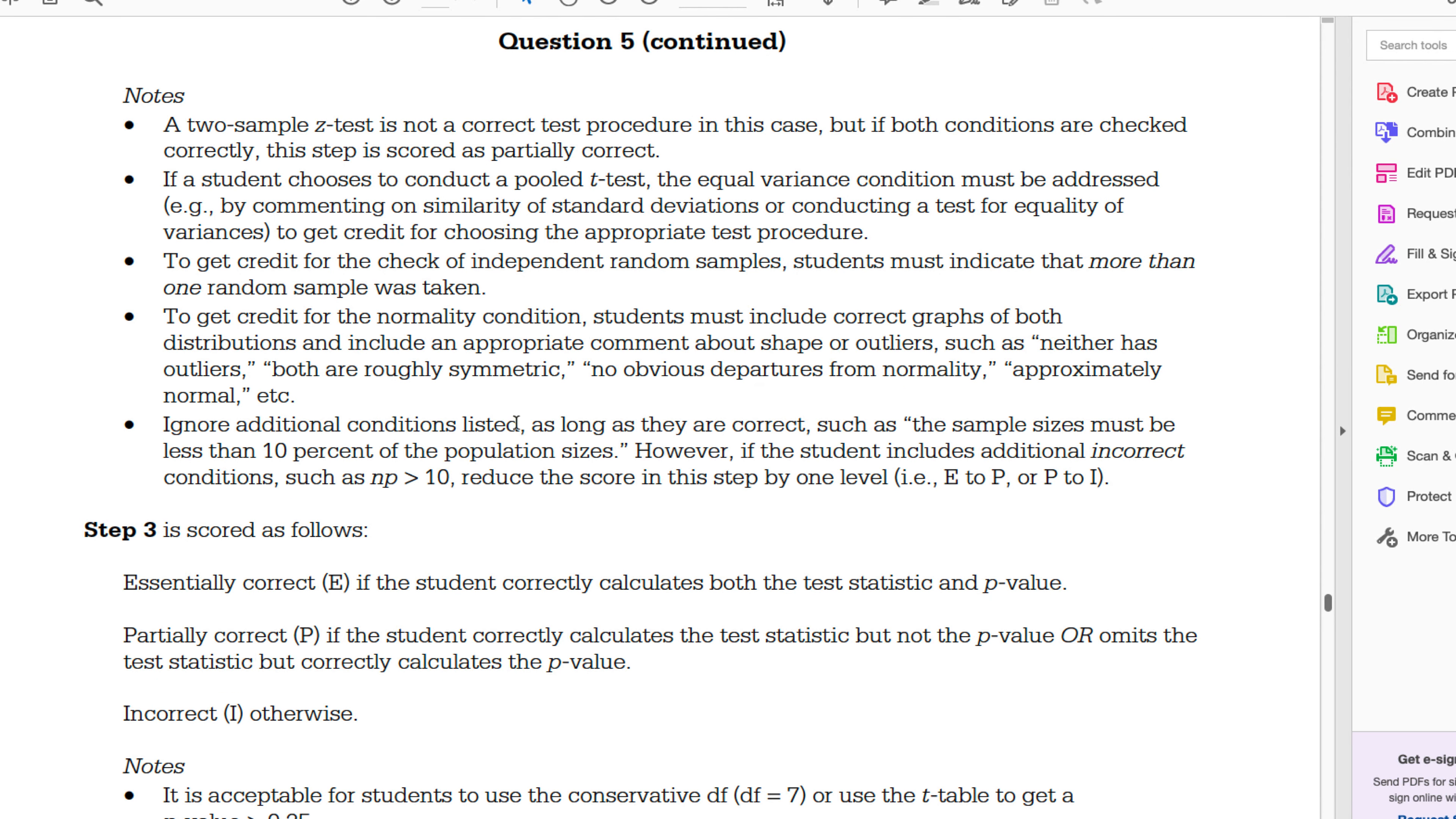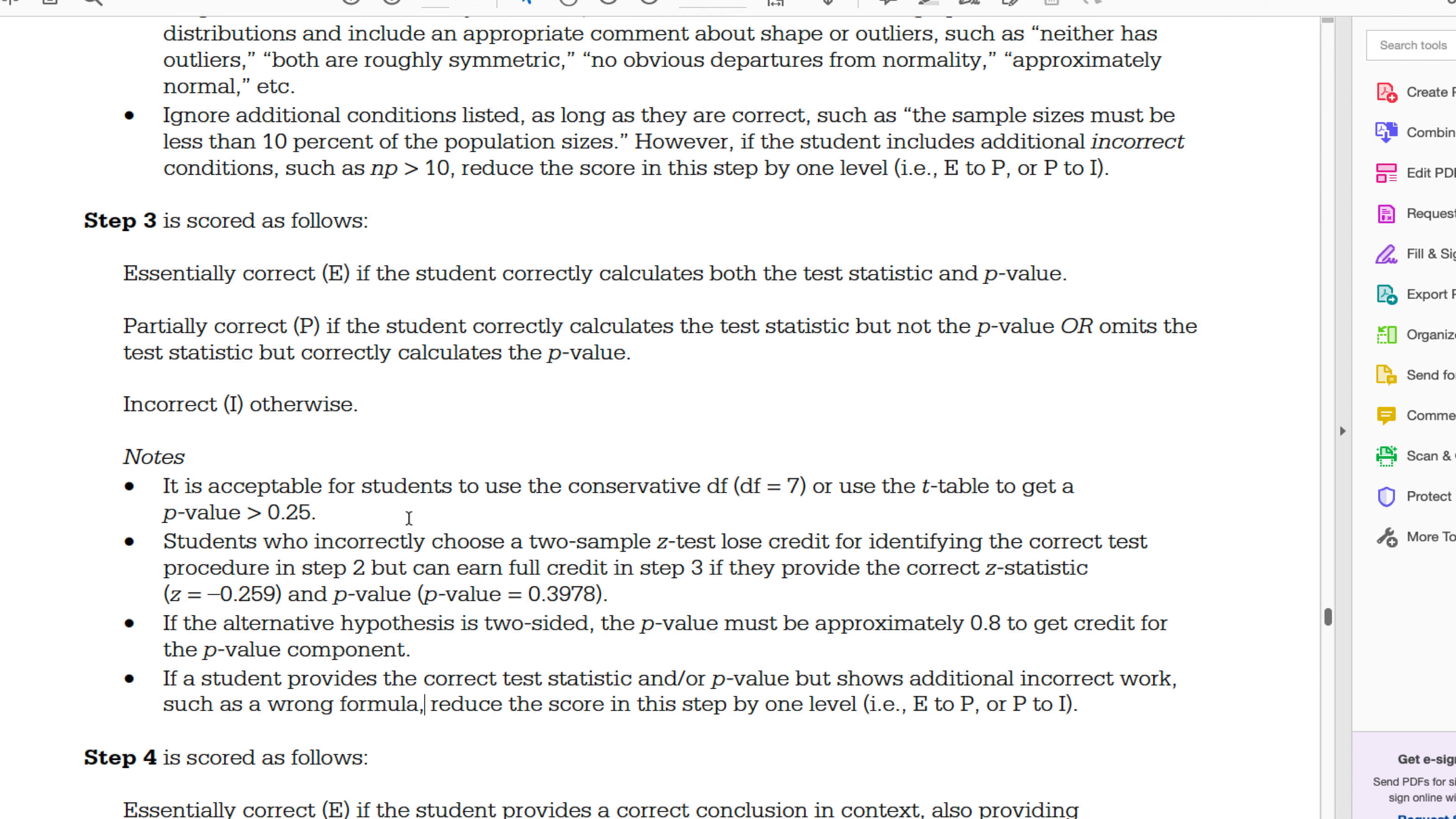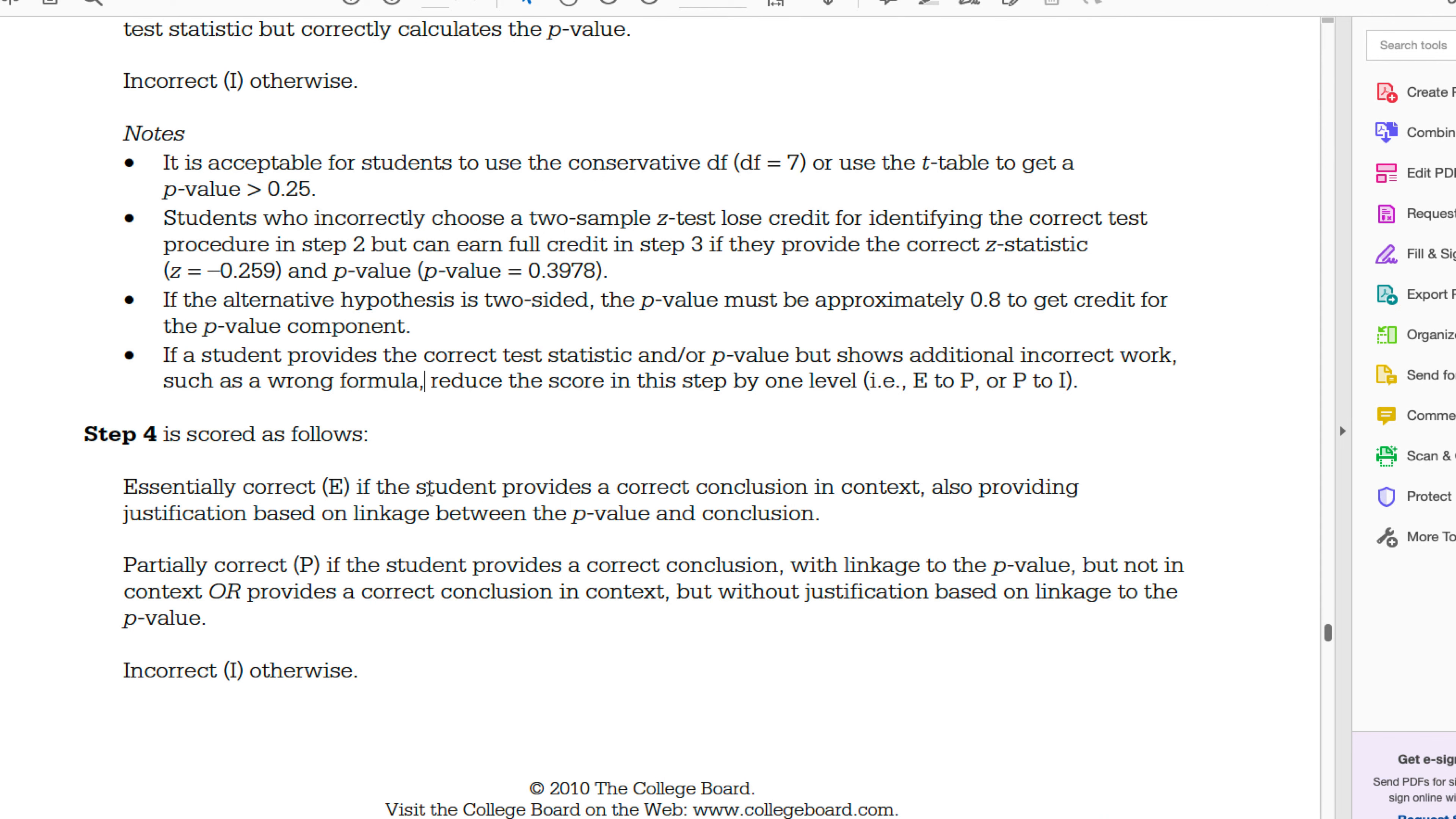Step three: if you calculate the test statistic, if a student provides correct test statistic but shows additional incorrect work such as the wrong formula, then you have to reduce it. I'm looking for the part that says you don't have to write the formula. It doesn't really say you don't have to explicitly, but as long as you put down the name of the test and you put the test statistic and the p-value, then you're good to go. Just double checking. I'm thinking out loud. You should read it too.